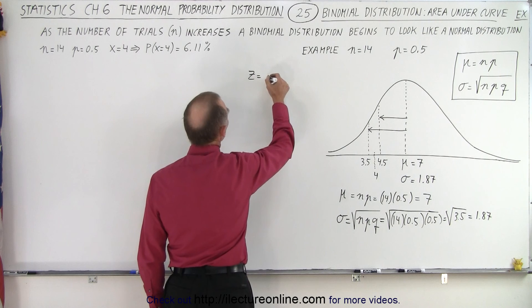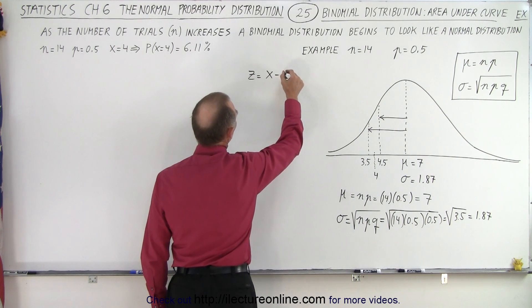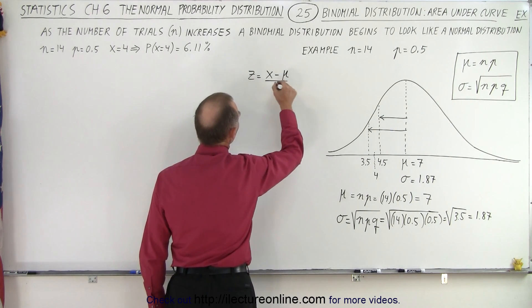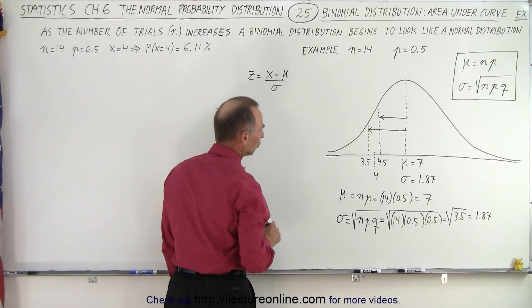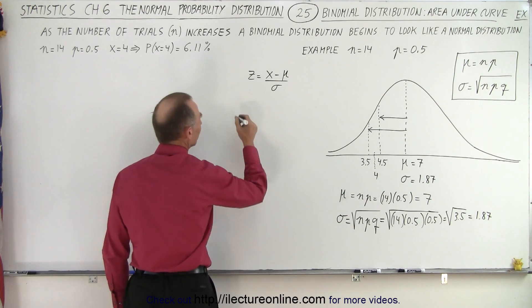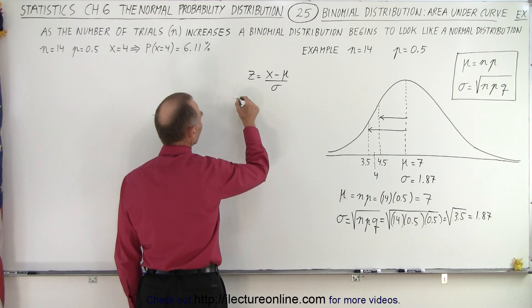So now we need to find the two z values. We remember that z is equal to x minus the mean divided by the standard deviation, so we're going to calculate for the first value being 4.5.